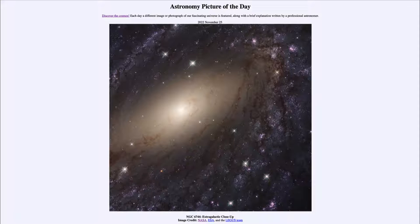So what do we see here? Well, this is a part of a spiral galaxy and the spiral galaxy is known by its catalog designation of NGC 6744.